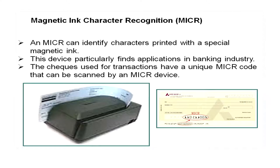The next input device is MICR — Magnetic Ink Character Recognition — a device used to identify characters printed with a special magnetic ink. The common place where you must have seen this is on a bank check; the check contains the MICR number at the bottom, as shown in the slide. Whenever you deposit a check, this number is scanned by the device to verify the authenticity of the transaction. MICR is a very useful device for banking transactions.